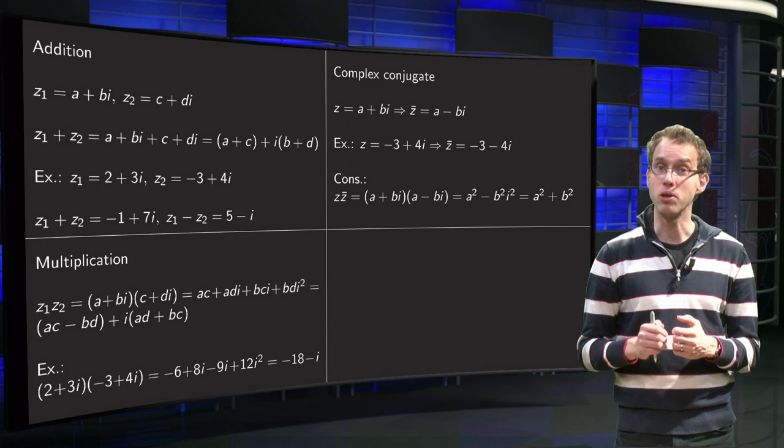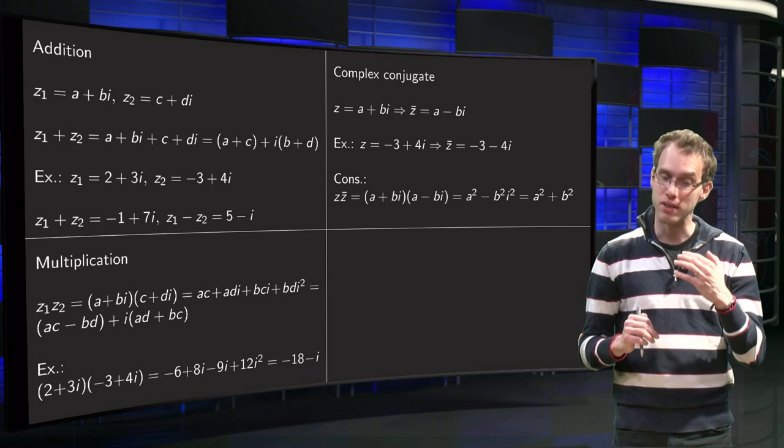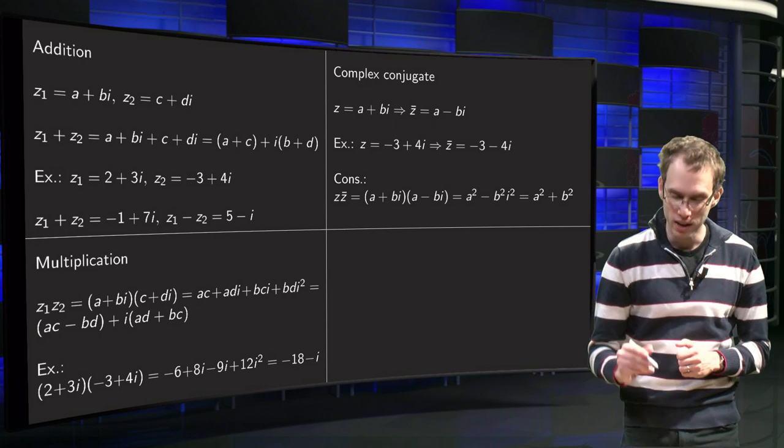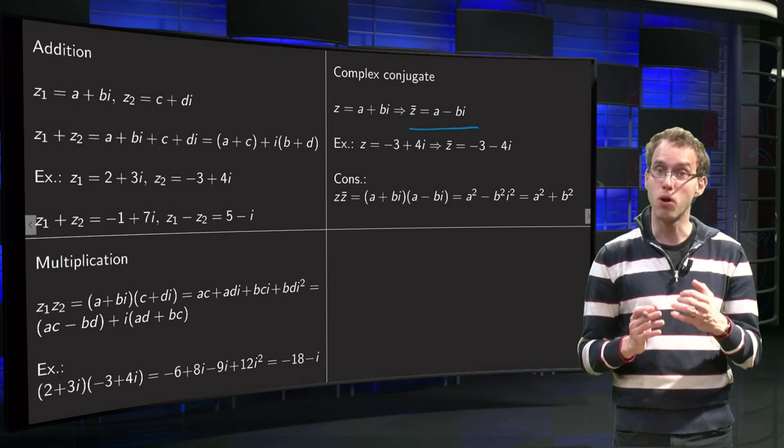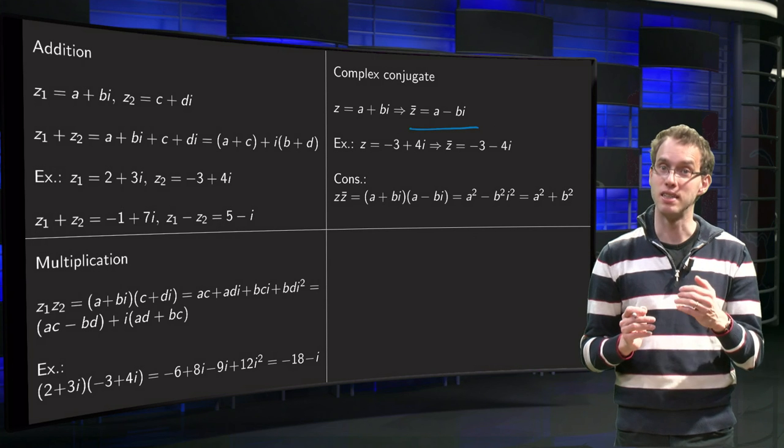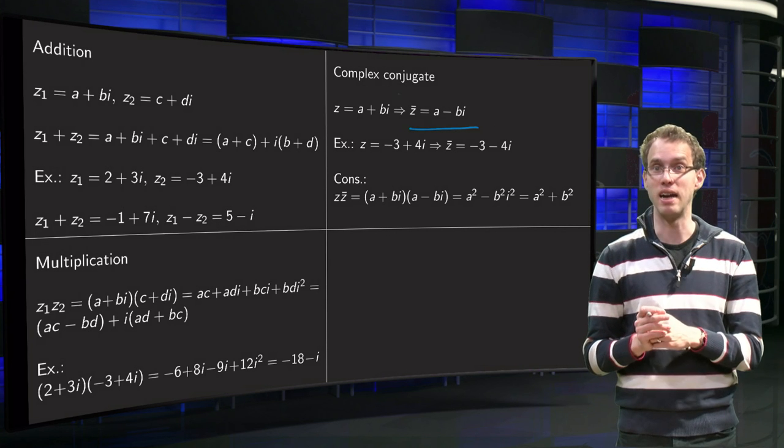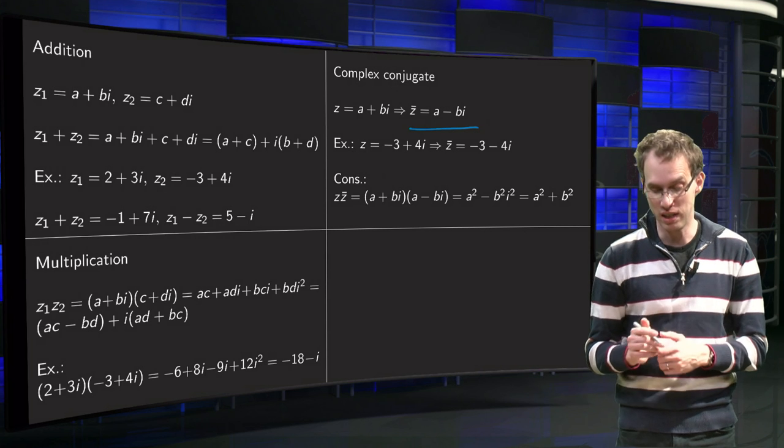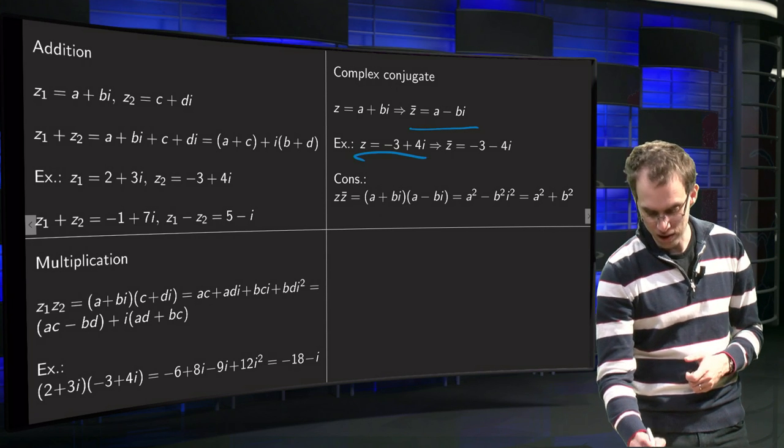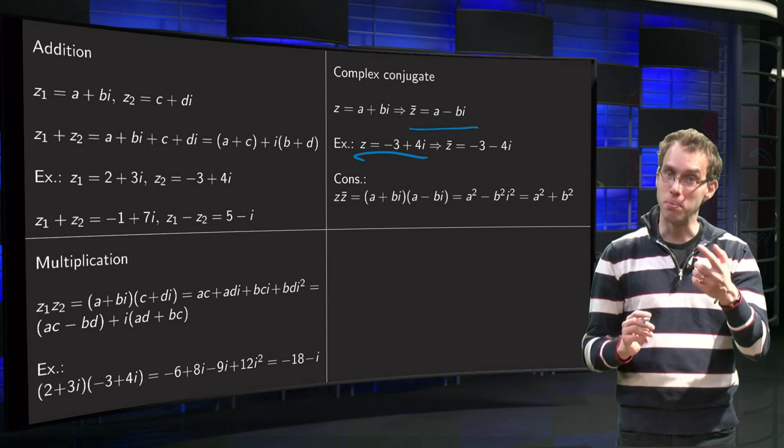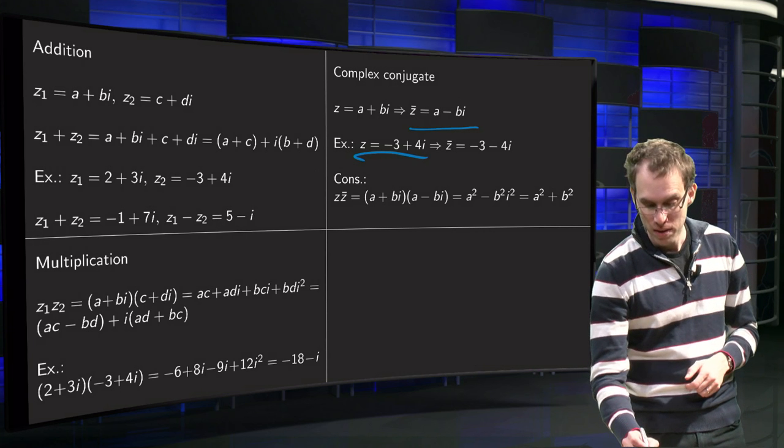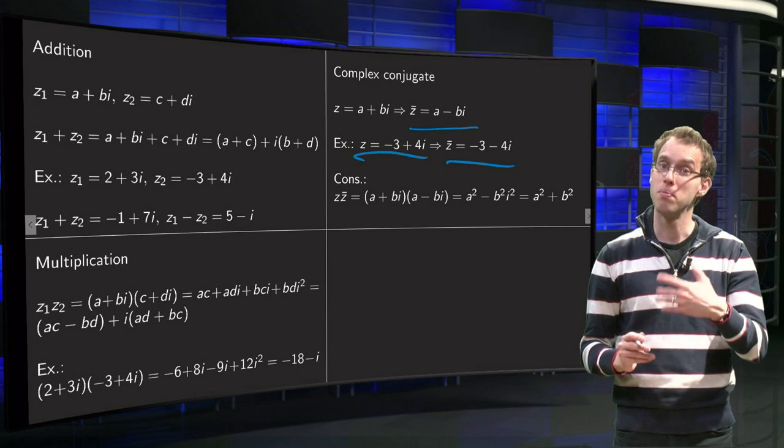Next, complex conjugate. What is that? Well, if we have z = a + bi, then we can define another complex number, z̄, the complex conjugate of z, as z̄ = a - bi. So computing z̄ is really easy. If you have z = -3 + 4i, your z̄ has the same real part, but the imaginary part gets a sign change. So z̄ = -3 - 4i.